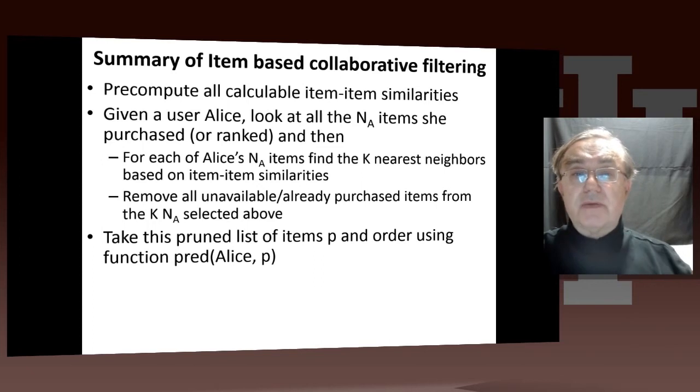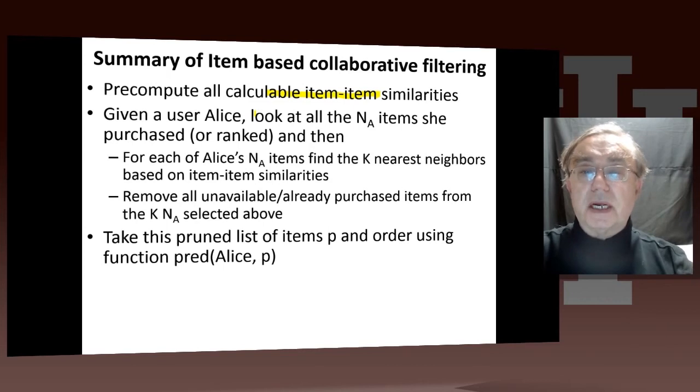Here we have a basic summary of item-based collaborative filtering. You pre-compute all the calculable item-item similarities. Maybe you make a cut, but only items which have a certain number of users in common can you calculate it. If two items only have three users in common, that may not be enough to make a reliable prediction. Then a user comes along, she logs in. You know immediately what she's purchased or ranked in the past. Then you secretly, while she's drinking her coffee and deciding what to do, you immediately run your algorithm because you know she'll want to have some predictions.